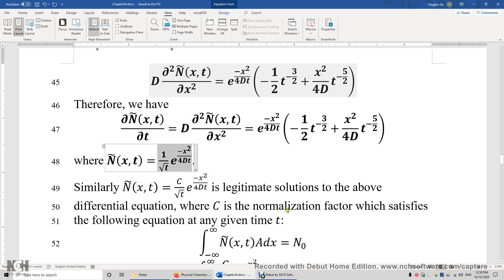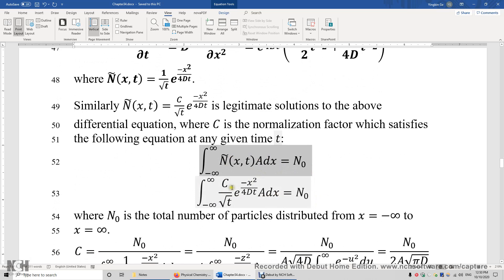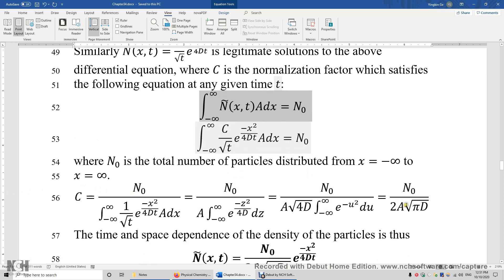Specifically, C is the normalization factor that satisfies this equation. So this is to ensure that the total number of particles is N_0. And by solving this equation, we plug in the expression of ṅ, we solve for C, and C can be determined over here.